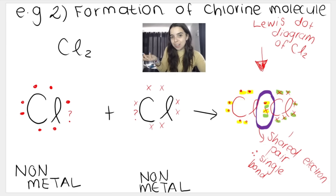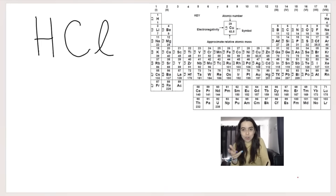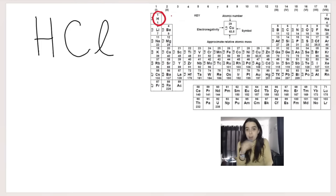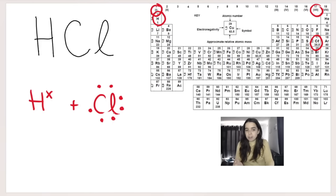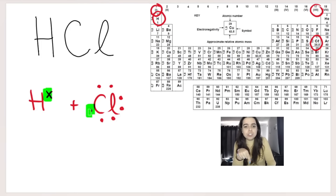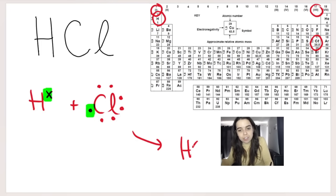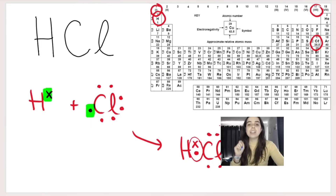Now let's look at HCl, or hydrochloric acid. It's a covalent bond because hydrogen is a non-metal — even though it appears on the left-hand side of the periodic table, hydrogen is an exception and is a non-metal — and chlorine is also a non-metal. Hydrogen has one valence electron and needs two to be stable, so it needs one more. Chlorine has seven valence electrons and needs one more. They share that one electron each, drawing closer together with the shared pair in the middle — a single bond.